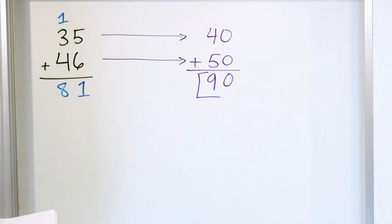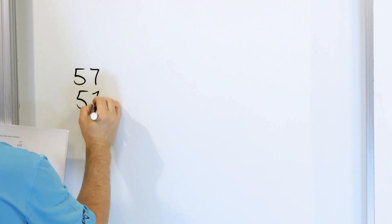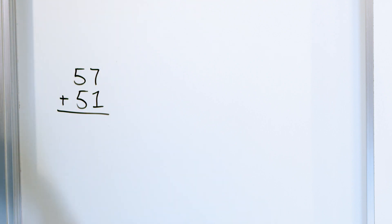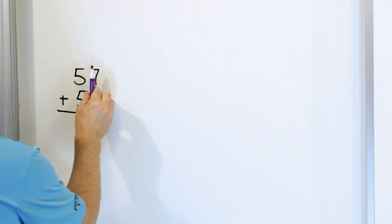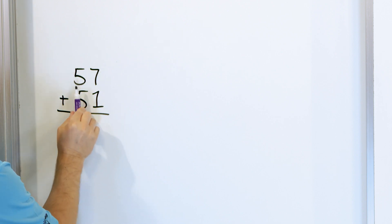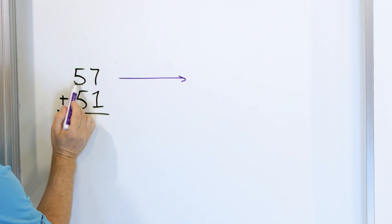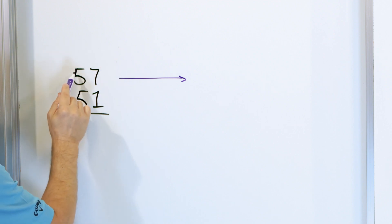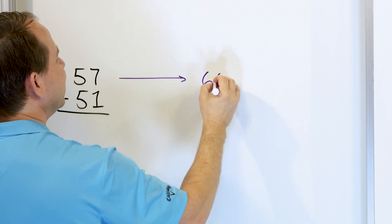Let's take a look at another example. Let's say we have the numbers 57 and 51, and I tell you to estimate the sum. Let's just round them. Both of these numbers have two digits, so we want to round to the highest digit that both numbers have — the tens place. That's the five right here. We look next door and see it's a seven, so our choices are to go up to 60 or down to 50. Since seven is bigger than five, we go up to 60.